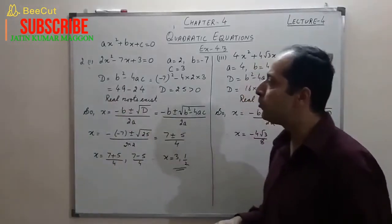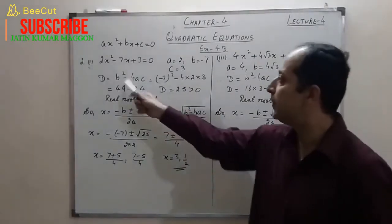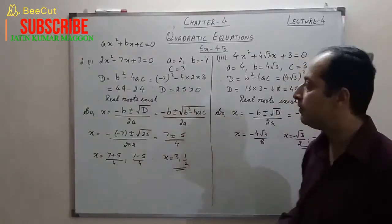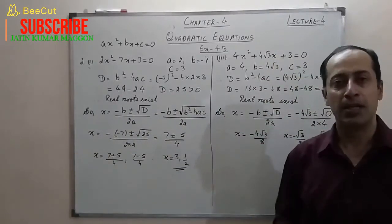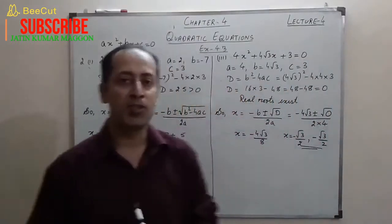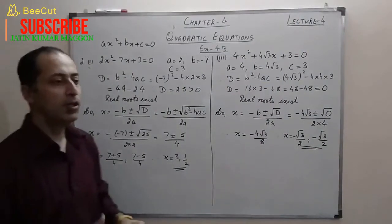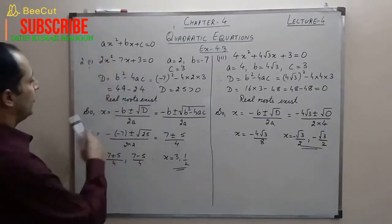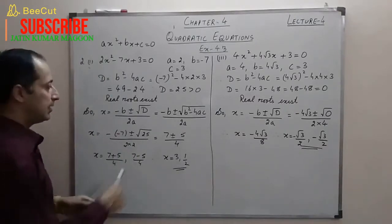We substitute the values: b = −7, a = 2, c = 3 into the discriminant formula D = b² − 4ac. So D = (−7)² − 4×2×3, which gives D = 25. Since D > 0, real roots exist. We then apply the quadratic formula: x = (−b ± √D) / 2a.